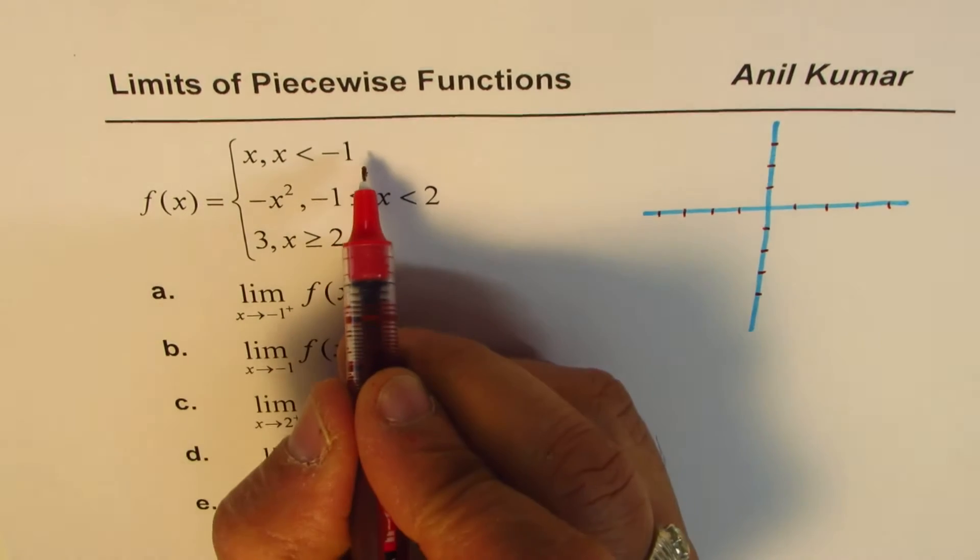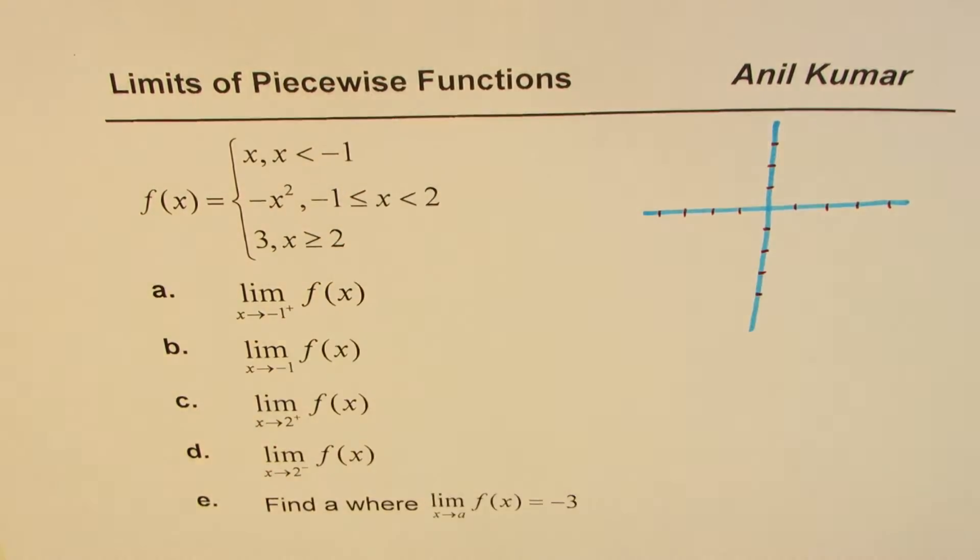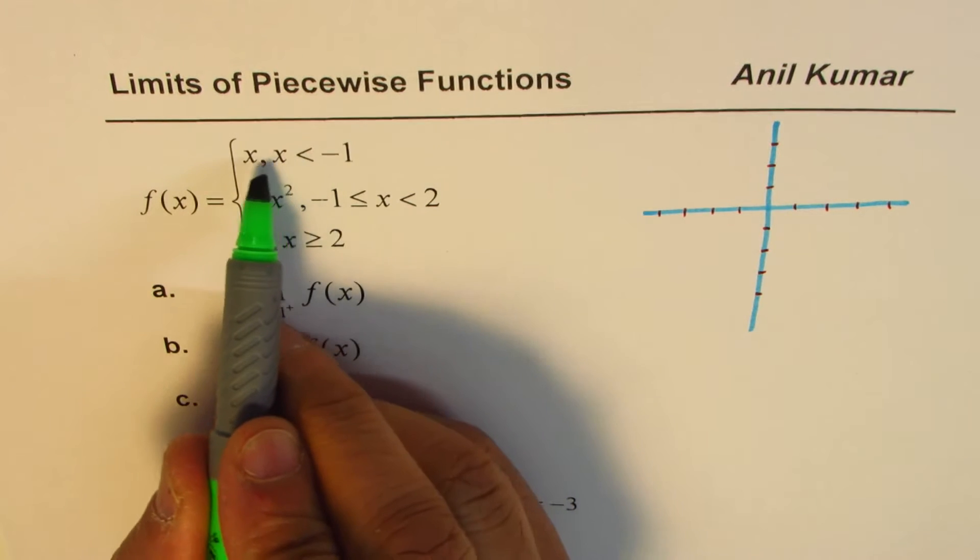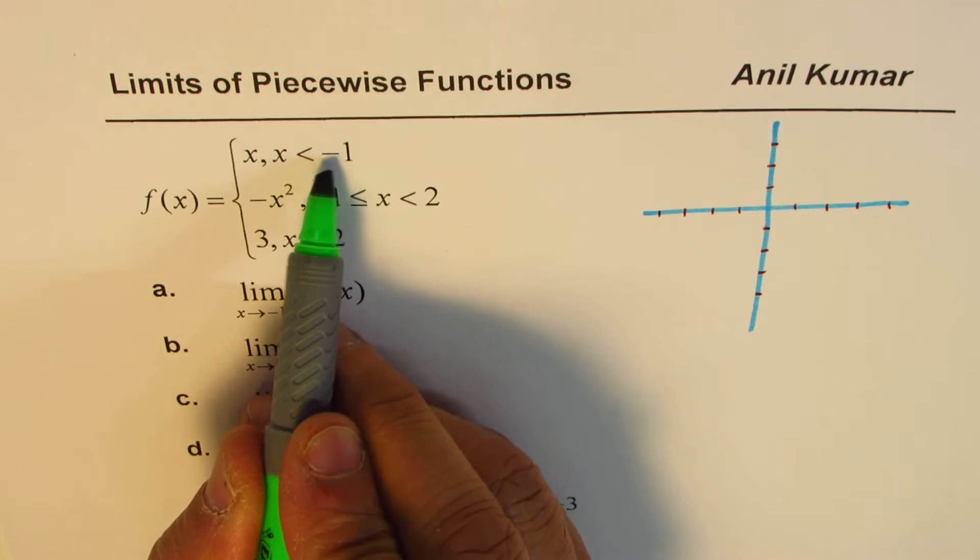Let's start with the very first piece. So this is, you could use table of values to sketch them, right? Use table of values. So when x is -1, -1 is not included, less than -1.